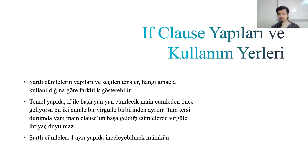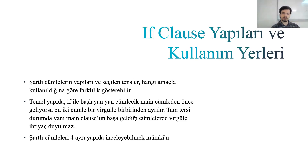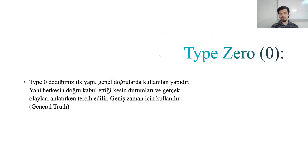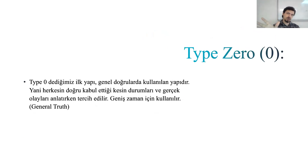Şartlı cümleleri dört ayrı yapıda, artı bir ile beş tane type olarak incelemek mümkün: If sıfır, bir, iki, üç ve bir de mix var. Mix'i bazı kaynaklar type olarak kabul eder, bazıları etmez; ben mix'i type olarak kabul ediyorum. Type 0'dan başlarsak: Type 0 genel doğrular vermek için kullanılıyor. Herkesin doğru kabul ettiği kesin durumları, bilimsel doğruları ve gerçek olayları anlatırken tercih ediyoruz. Geniş zaman için kullanılıyor — bilimsel doğrular, genel geçerli bilgiler. Bunların hepsi Type 0 ile anlatılır. Bu type'ın ismi 'General Truth.'